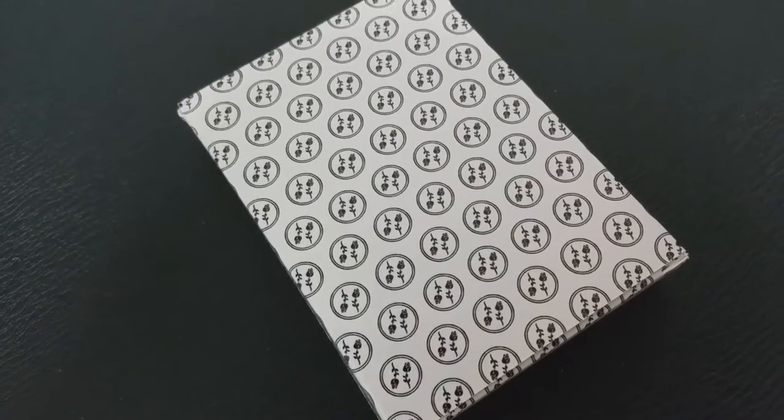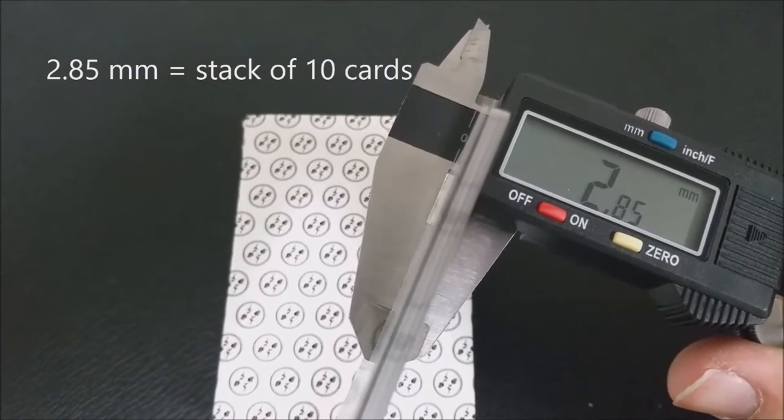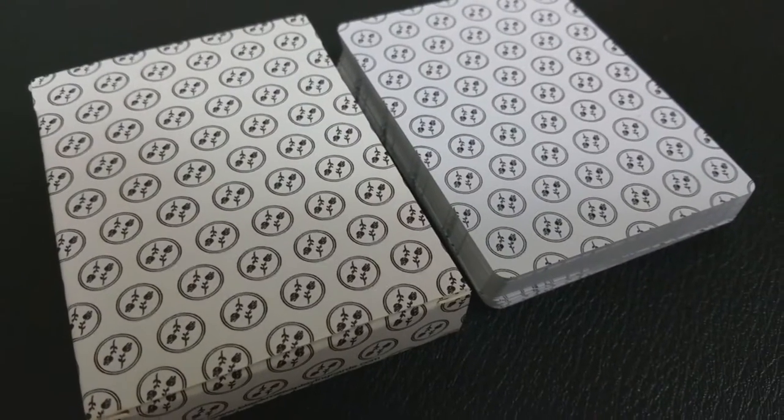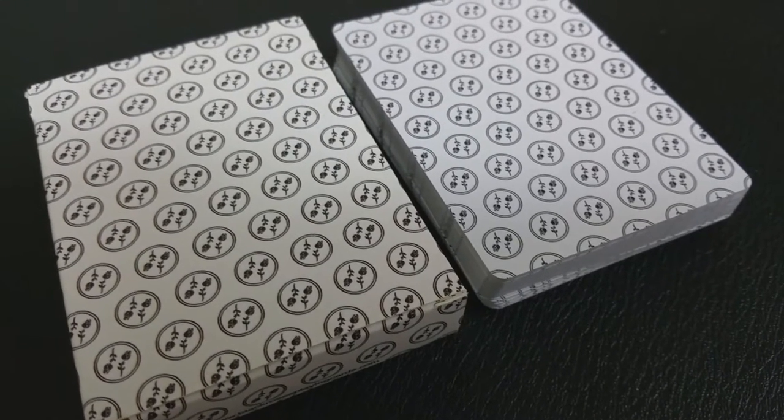These cards were printed from makeplayingcards.com, M-P-C. As you can see from the back design, it is very similar to the tuck case. It's just a Black Roses Playing Card icon repeated throughout on the back and it goes all the way to the edges.